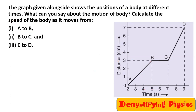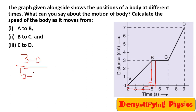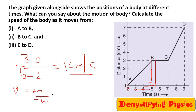Find out the value of speed. Speed is given by the slope of the graph. Slope is perpendicular upon base. For segment A to B, drop a perpendicular — this length is 3 minus 0, upon the base 5 minus 2, so it is 3 by 3, which is 1 centimetre per second. We are essentially dividing change in distance by change in time. At B, distance is 3 and time is 5; at A, distance is 0 and time is 2.